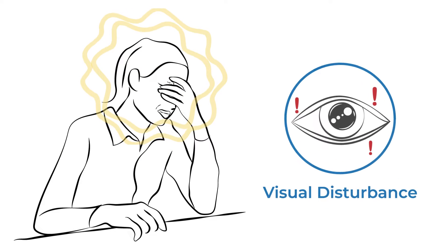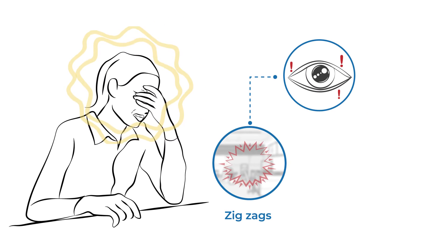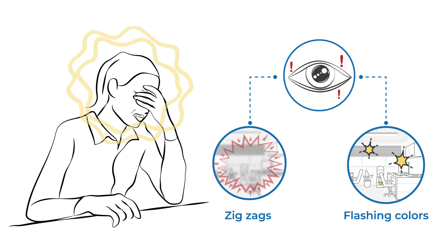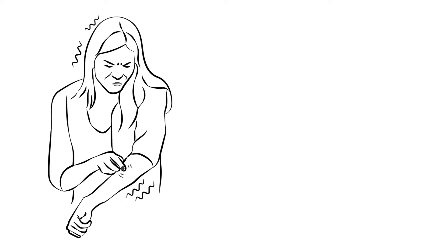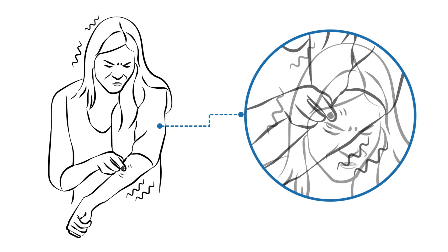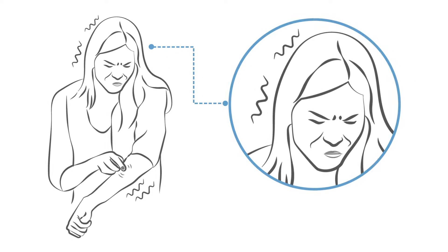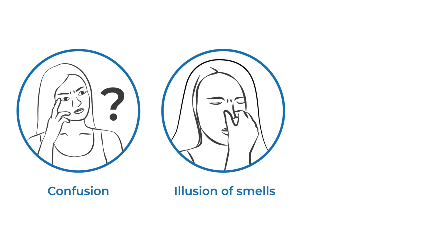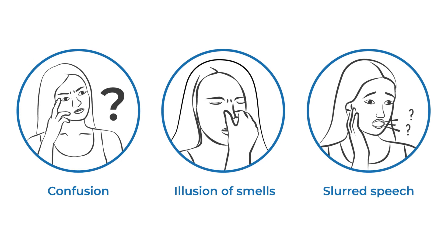An aura may include visual disturbances such as zigzag lines or flashing colors. A sensory aura may include a tingly sensation that begins in the arms and moves up towards the face. Other auras include confused thinking, the illusion of smells that aren't there, or slurred speech.